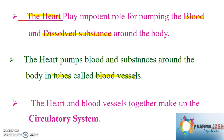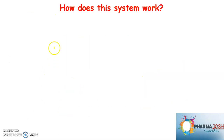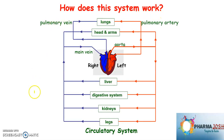The heart pumps blood and dissolved substances around the body through tubes called blood vessels. The heart and blood vessels combine together to make one system — this is the circulatory system. Here is a diagram that explains how this circulatory system works. The red and blue colored lines represent the blood vessels.